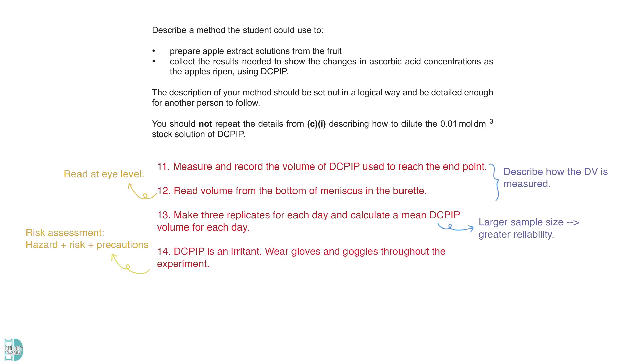Lastly, we have to do a risk assessment. You must identify the hazard, state the risks, and describe the precautions taken. In this case, DCPIP is an irritant. We must wear gloves and goggles throughout the experiment.